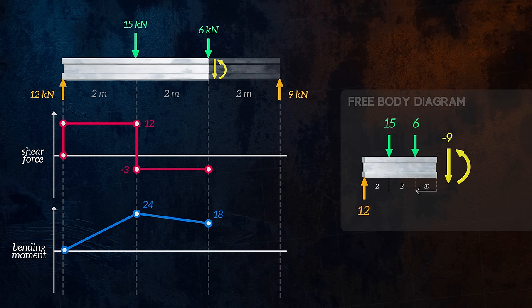Where concentrated forces are applied, there is a sudden jump in the shear force diagram. And where concentrated moments are applied, there is a sudden jump in the bending moment diagram. These equations will not be applicable across discontinuities in the diagrams. One final observation is that when the shear force is equal to zero, the bending moment curve will be at a local minimum or maximum.